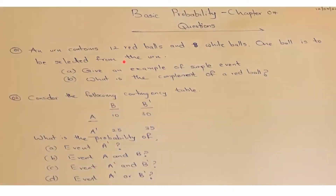The first question tells you an urn contains 12 red balls and 8 white balls. One ball is to be selected from the urn. Part A: give an example of a simple event. Part B: what is the complement of a red ball?